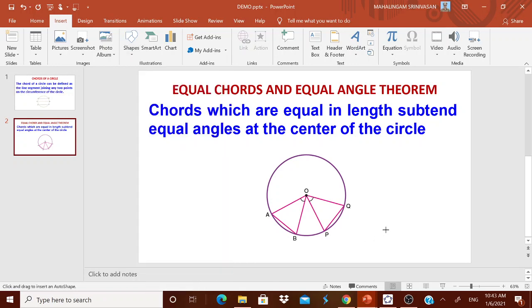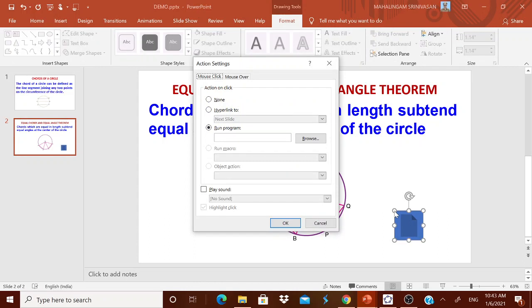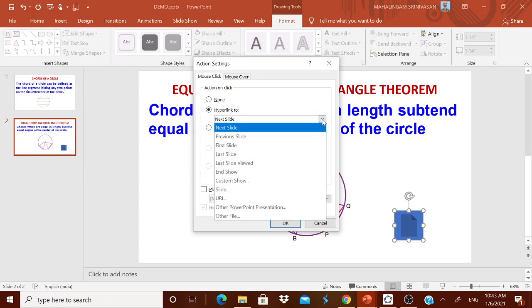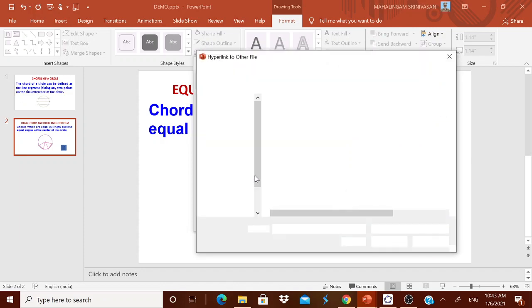Immediately it will ask which hyperlink you want to give. In that hyperlink, you come down and go to other file. Immediately it will ask which file you want to give the link. Now the GeoGebra file which I have made equal chord, this I have put it under this.